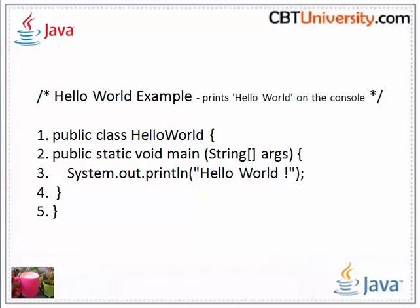Line three: System.out.println, in quotes, Hello World — that is in brackets. This is to display the output on the console. Here we have a string literal, which can also be an argument passed through the main method. We are going to discuss more about classes and methods in the coming tutorials.